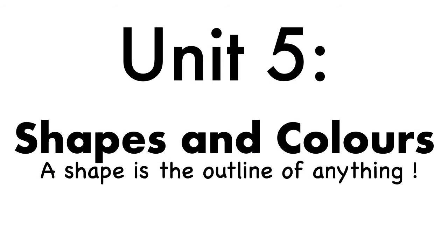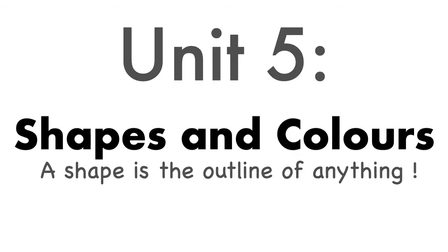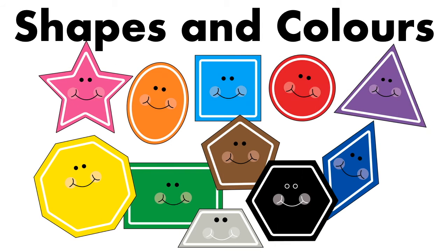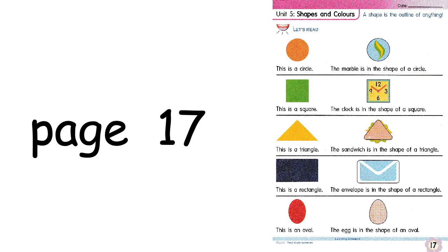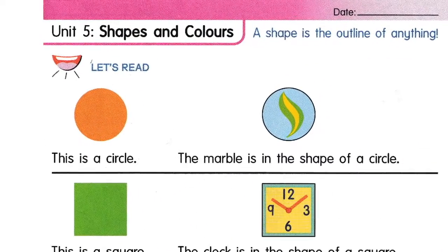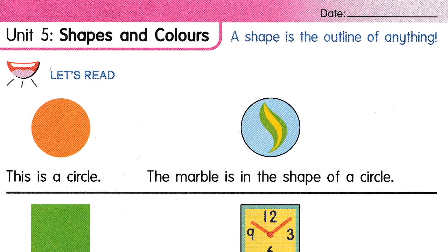Shapes and Colors. A shape is the outline of anything. Shapes and colors are everywhere around us. Let us look at page 17, Unit 5, Shapes and Colors.